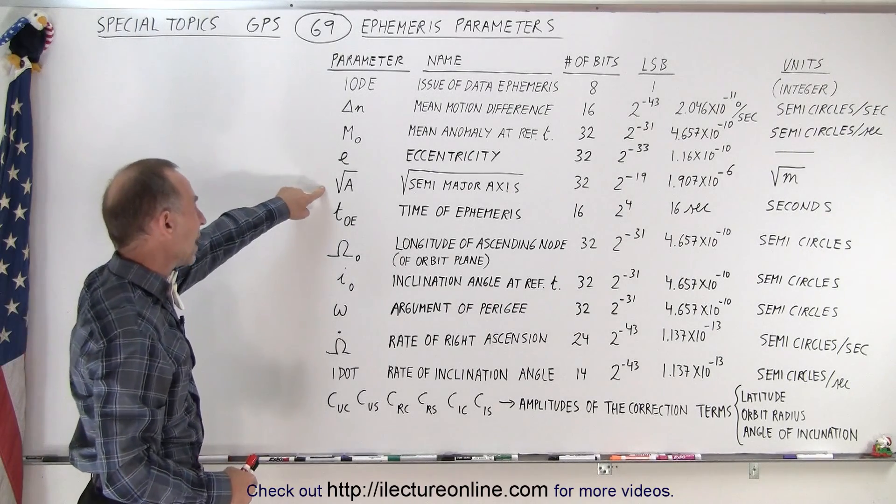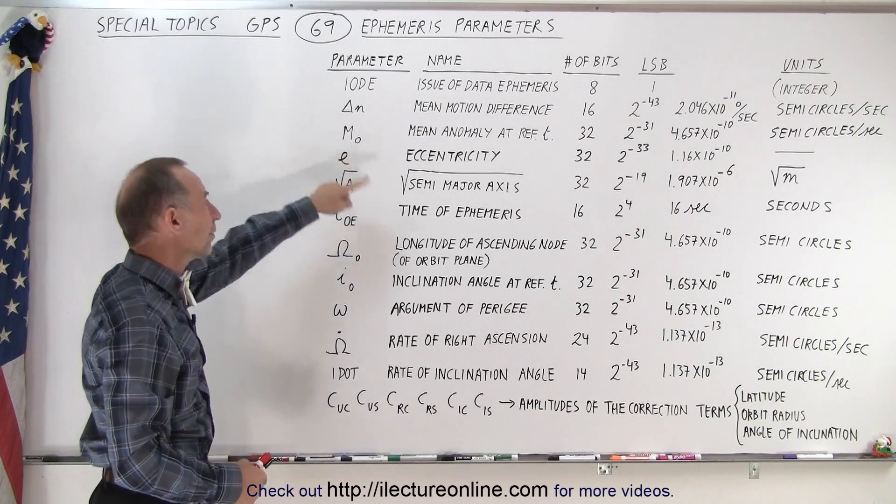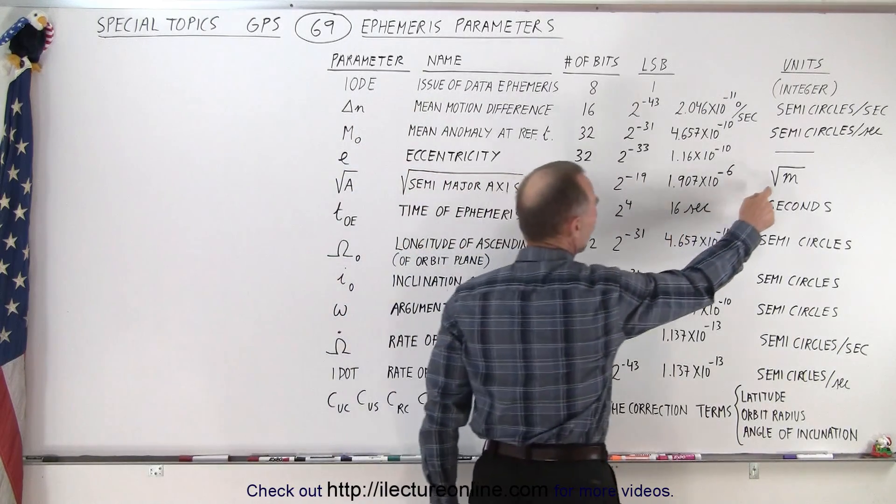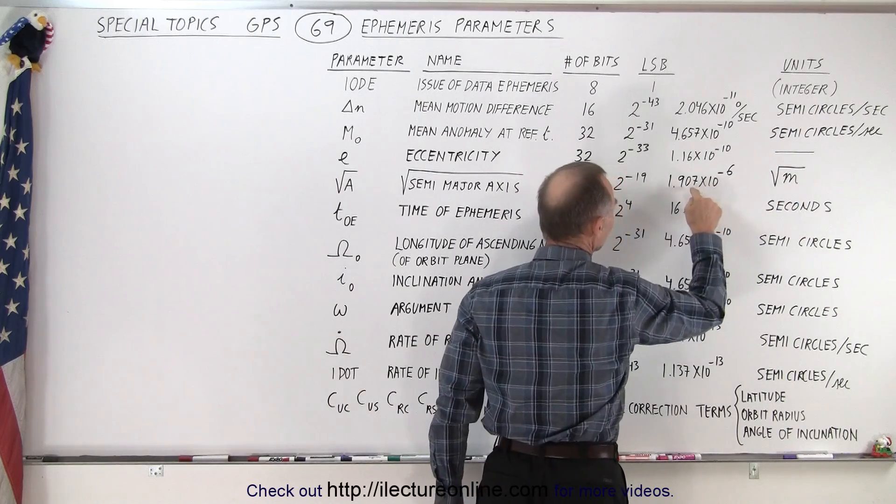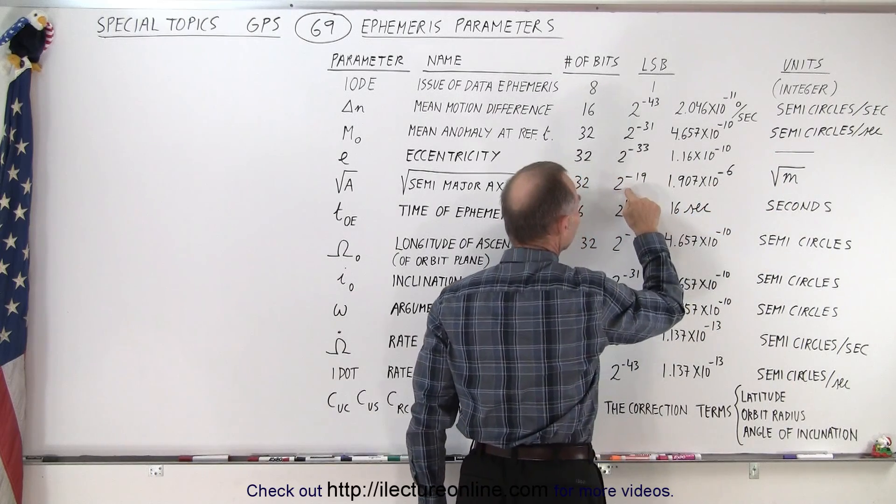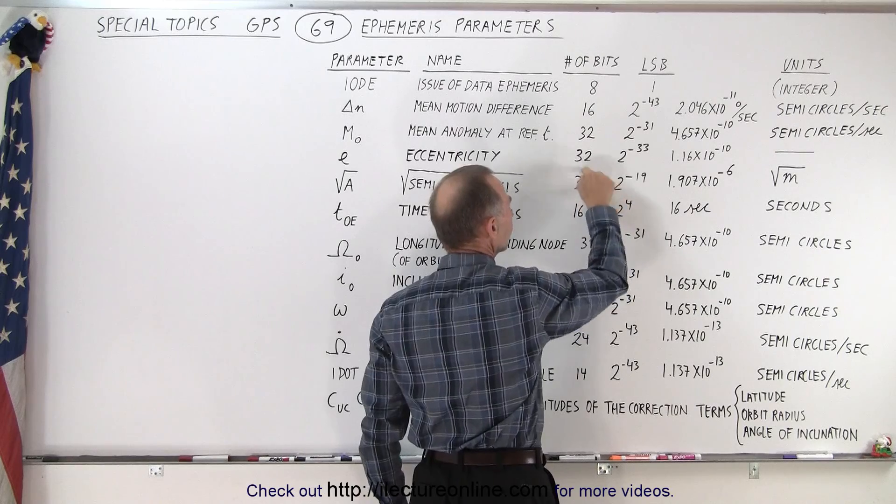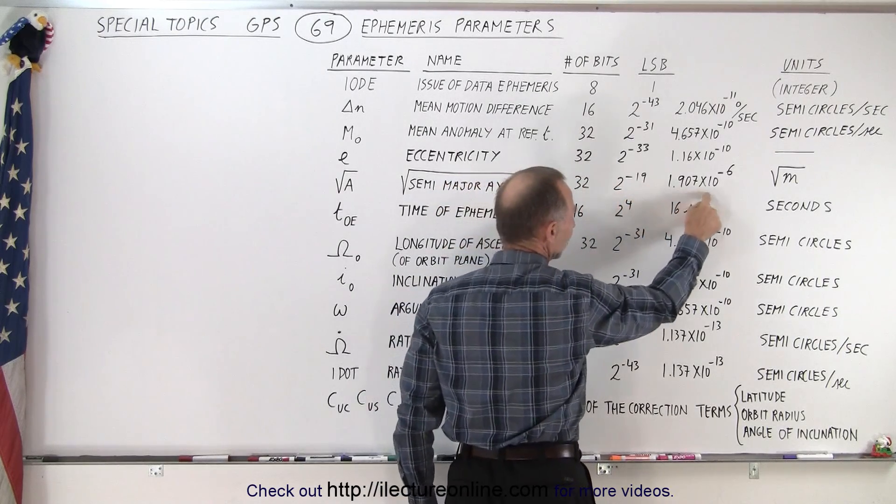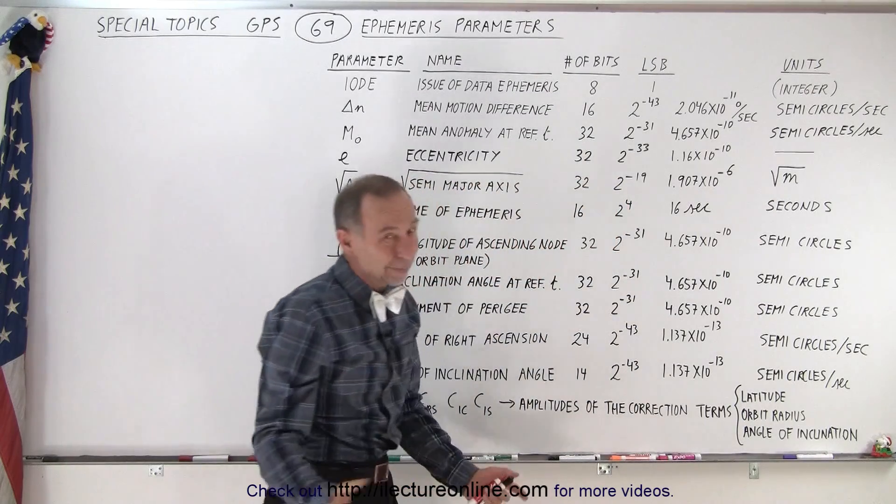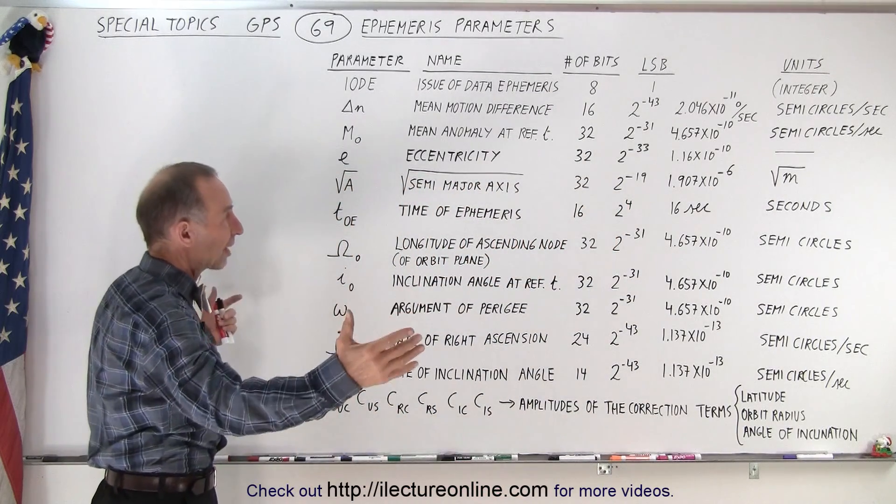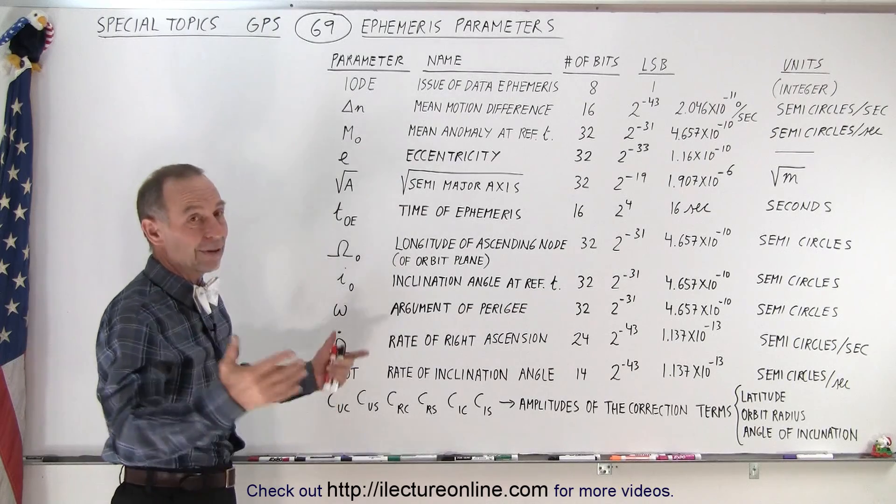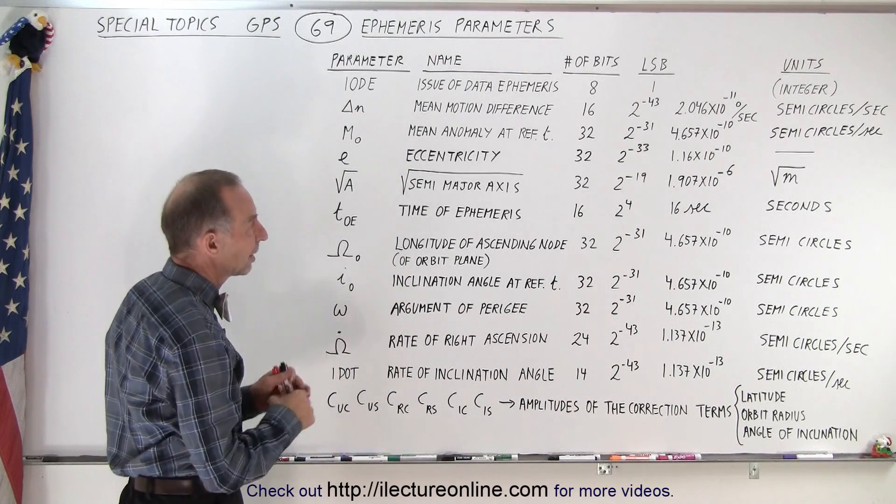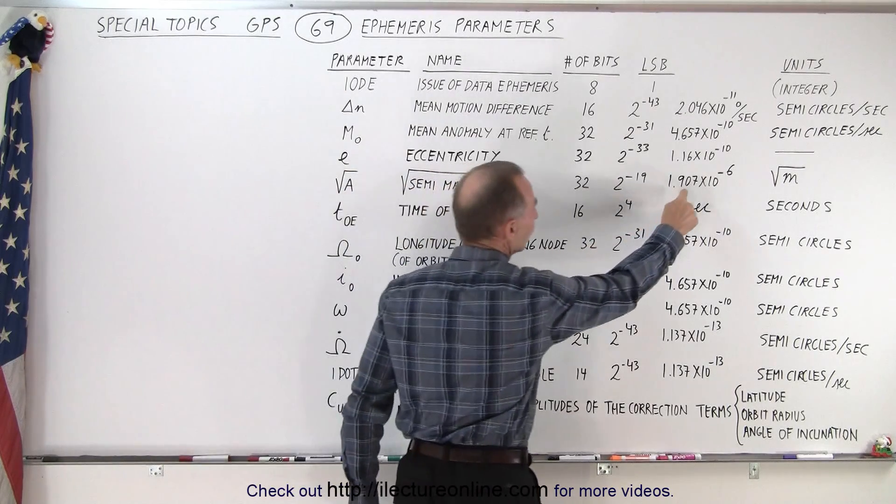The next one is the semi-major axis. It's actually the square root of the semi-major axis. Notice that the units are in square root of meters and the smallest LSB is 2 to the minus 19. Notice it's a lot of bits associated with that but the LSB is actually relatively large. It's 1.907 times 10 to the minus 6.